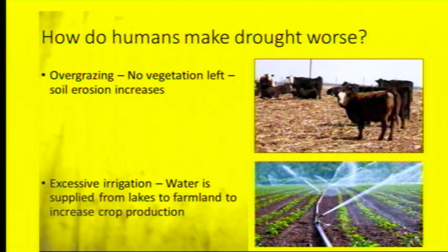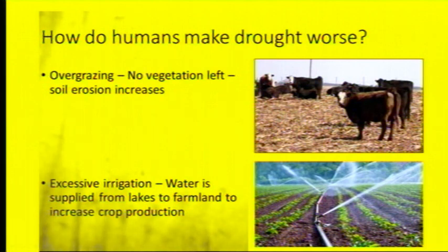Excessive irrigation is when water is supplied from lakes to farmland to help the crops. If we do that too much, there's not going to be enough water left in the rivers and lakes when we get to a drought.